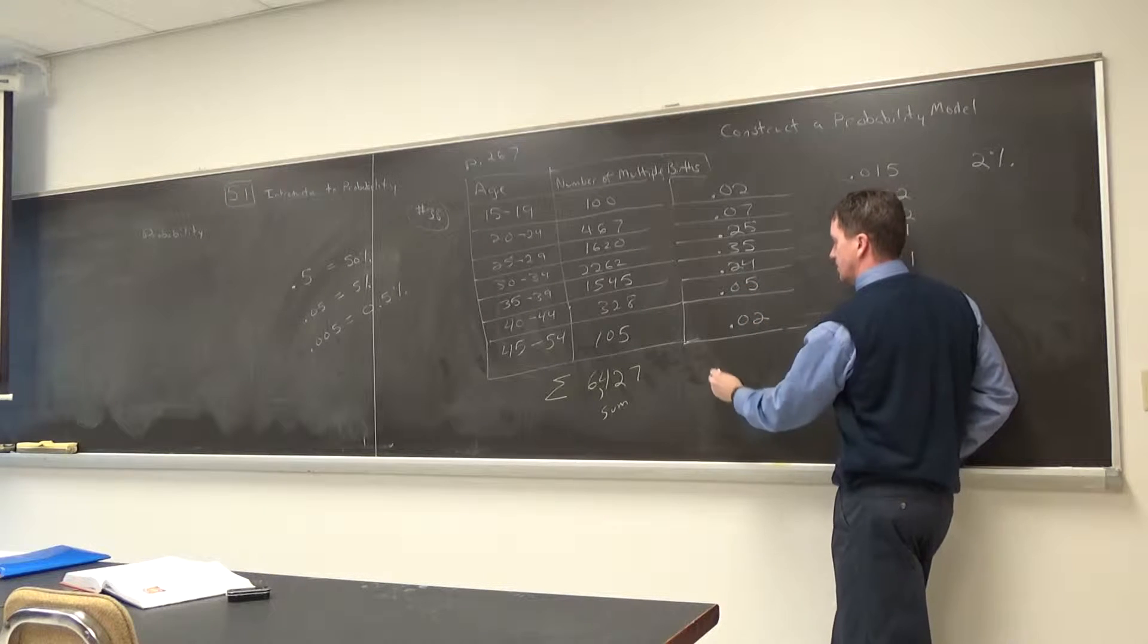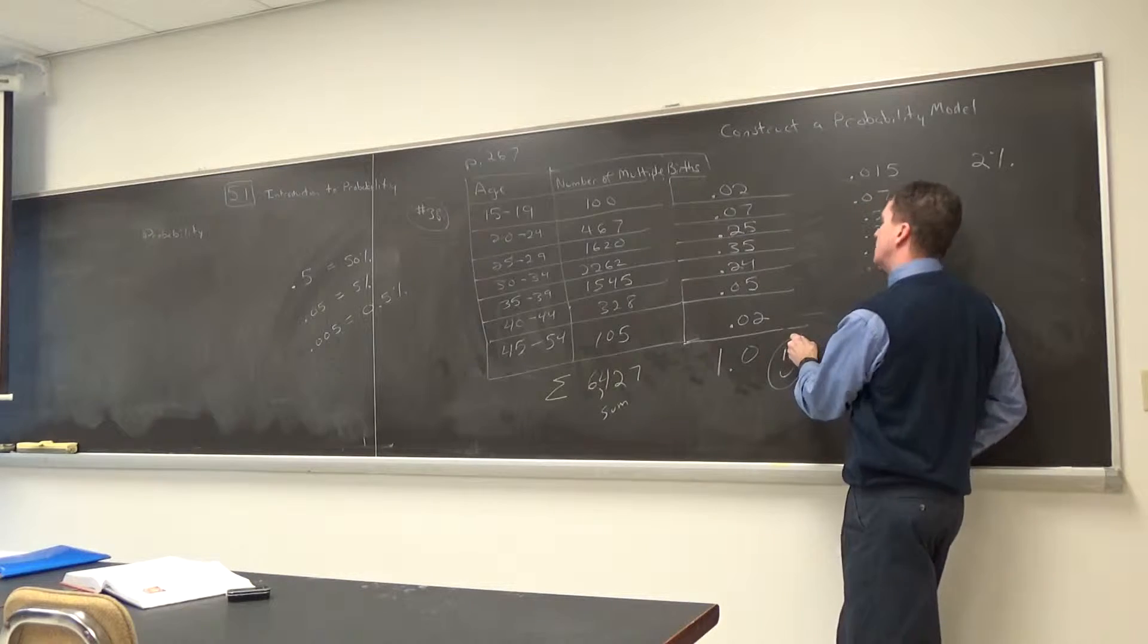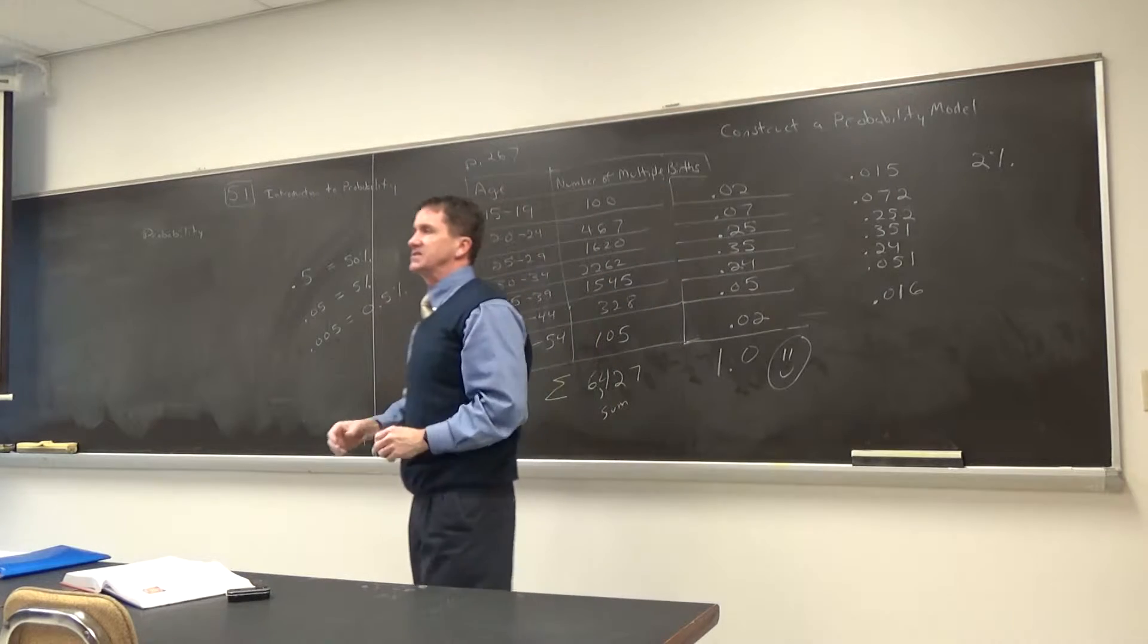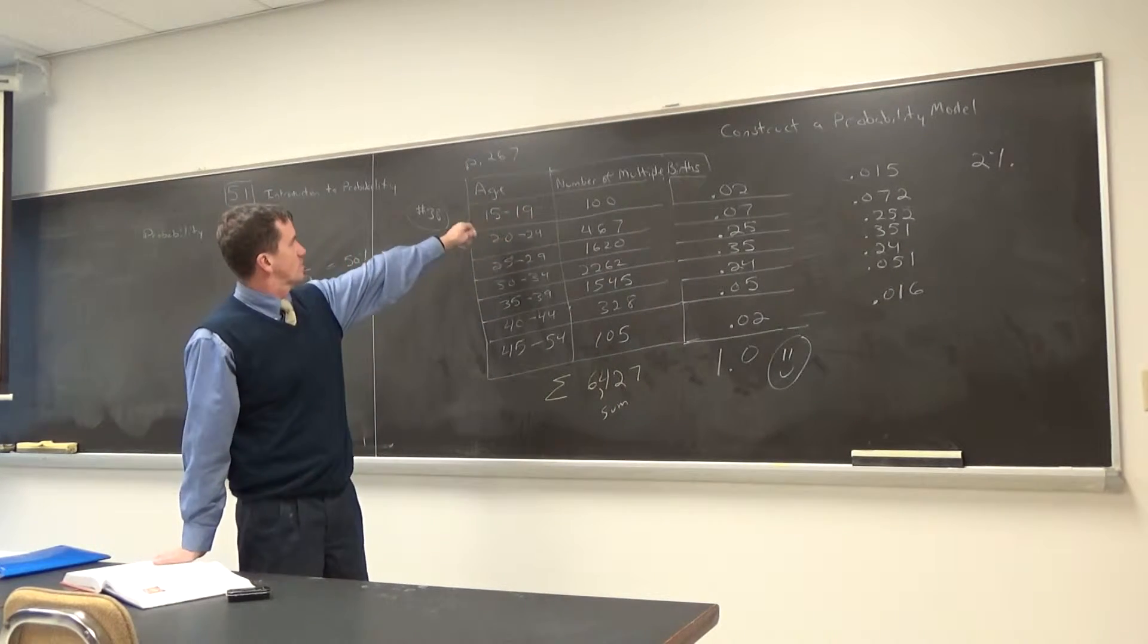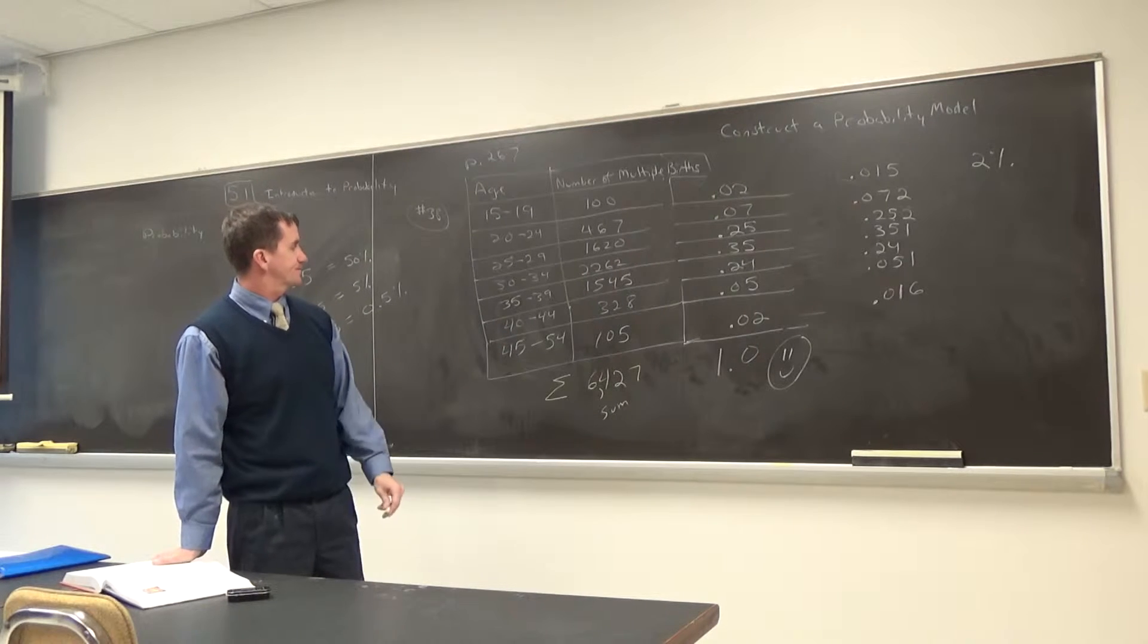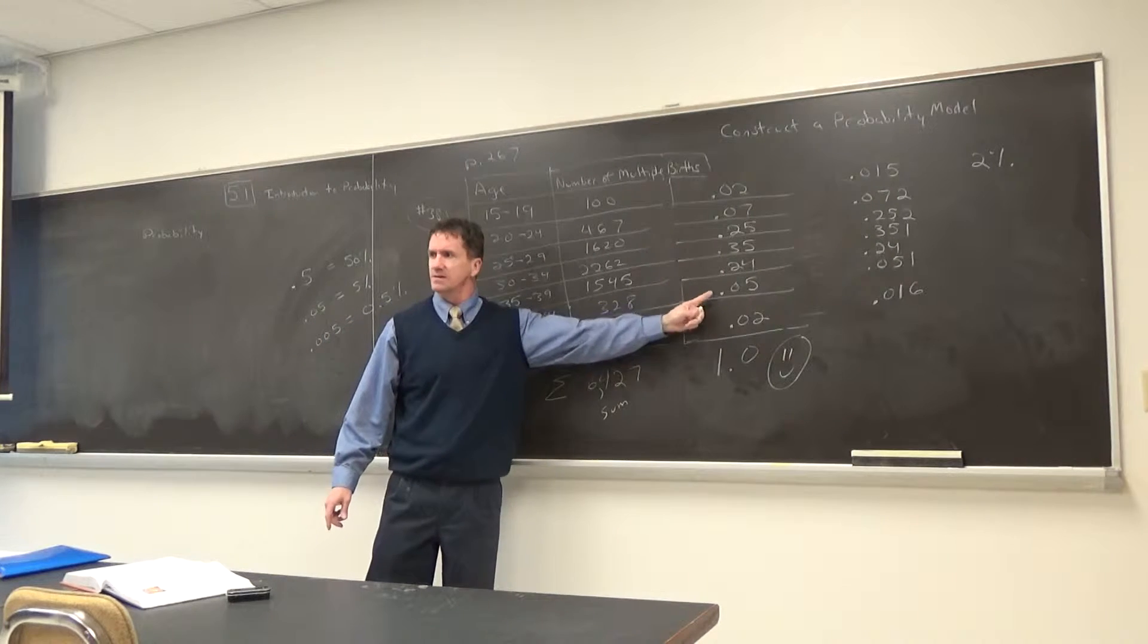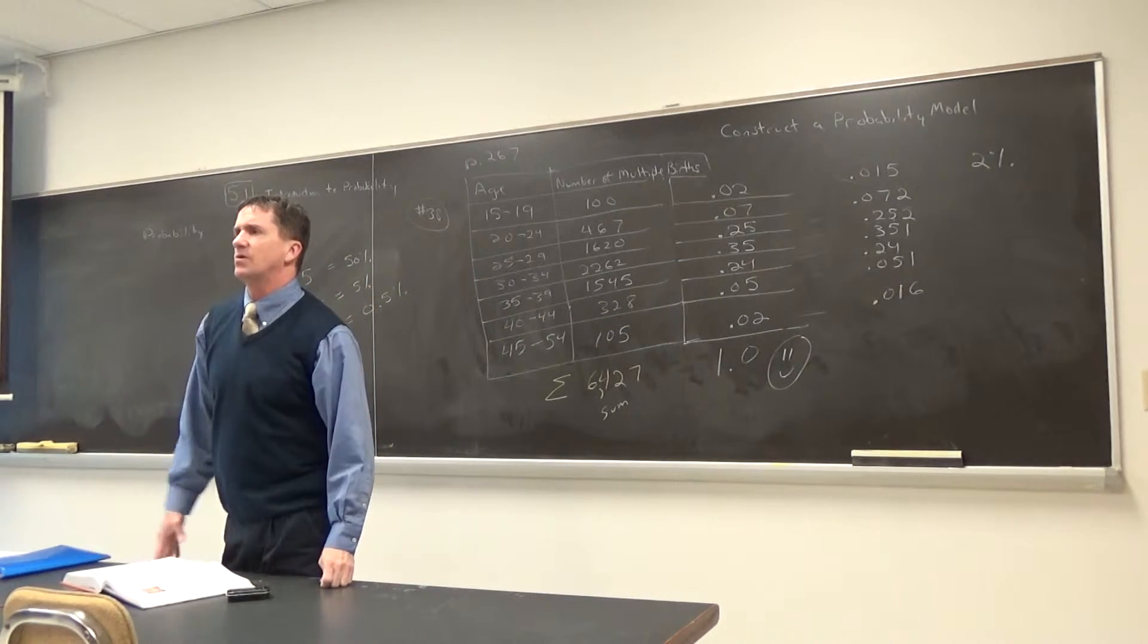You sum up to 1.0? We're good. I'm going to put my smiley face. We're good to go. And there's my presentation. Just to give rough estimates of what each of these percentages are. 2% of the multiple births for ages 15 to 19. This is interesting. So women 40 to 44, 5%. That's pretty high for women.